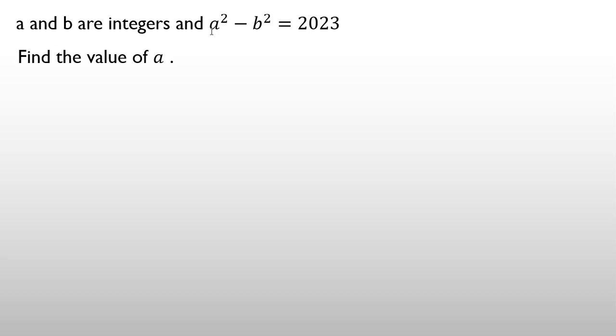a and b are integers and a² - b² = 2023. Find the value of a. This is an easy problem. I only want to show you the prime factorization of 2023.